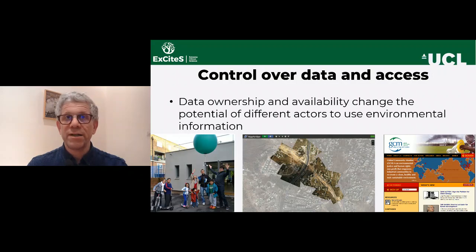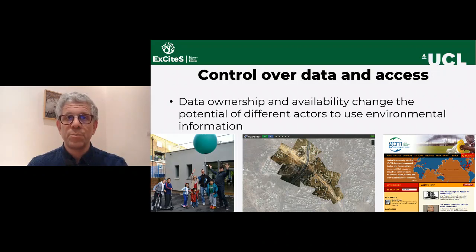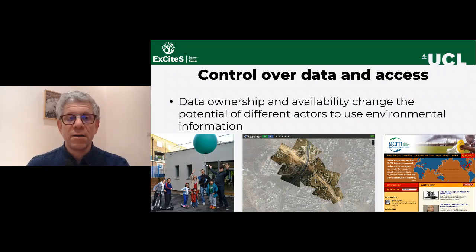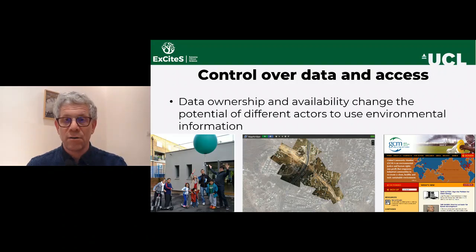There is also the issue of control over data and access. For example, the Global Community Monitor is a case where communities collect air quality samples because the factories are not releasing the information. Another example is from the Public Laboratory of Open Science and Technology, which created a method of balloon mapping — attaching a camera to a balloon and flying it over an area. In one case, a road built in a Palestinian village in Jerusalem was photographed this way, and the community used the image to argue their case in the Israeli parliament.